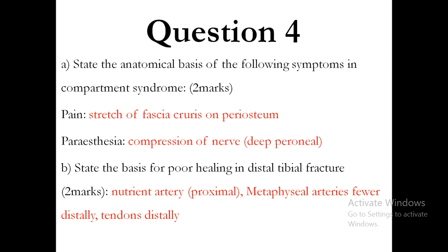Paraesthesia is usually due to compression of the deep peroneal nerve. Regarding the basis of poor healing in distal tibia fractures: in the distal tibia there is less blood supply because the nutrient artery is proximal, the metaphyseal arteries tend to be fewer distally around the ankle joint compared to the knee joint, and the tendons are distal while the muscle bulk and its associated muscular arteries are more proximal.